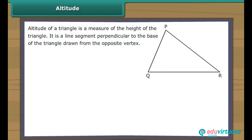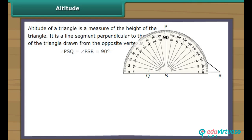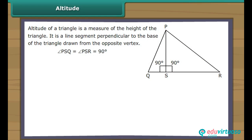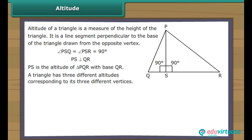Altitude. The altitude of a triangle is a measure of the height of the triangle. It is a line segment perpendicular to the base of the triangle, drawn from the opposite vertex. In the figure, line segment PS is a perpendicular drawn from vertex P to the base QR. It intersects QR at right angles. Therefore, PS is the altitude of triangle PQR with base QR.